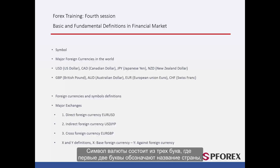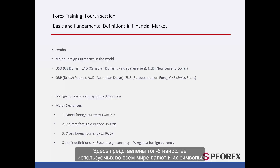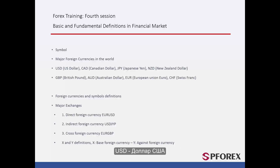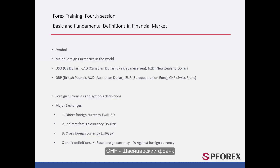A currency symbol consists of three letters, where the first two letters stand for the name of the country and the third letter for that country's currency. Here are the eight most globally recognised currencies and their symbols: USD, CAD, JPY, NZD, GBP, AUD, EUR, and CHF.